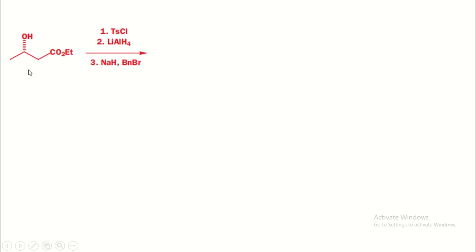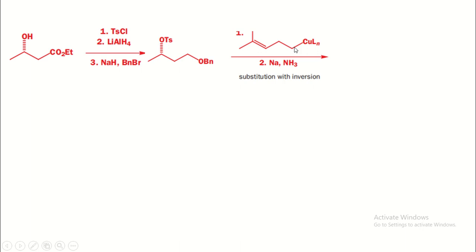In this reaction, the reactant has only one chiral carbon. First, the OH reacts with TsCl to form OTs, then the ester group is reduced by lithium aluminum hydride to give a primary alcohol. A base abstracts the proton from OH, making it O⁻, which then attacks the OBn carbon to give OBn. An organocuprate compound acts as a nucleophile, attacking the chiral carbon from the back side, and protection is done using a Bu reagent, giving an optically active product because the reactant is chiral.